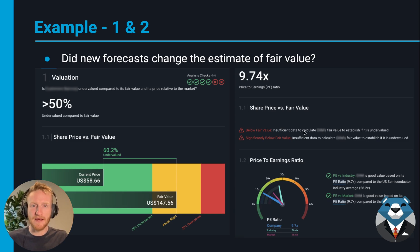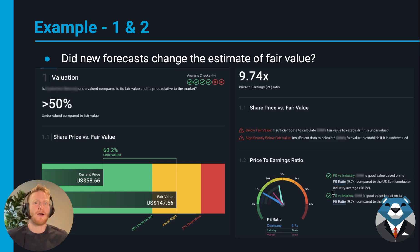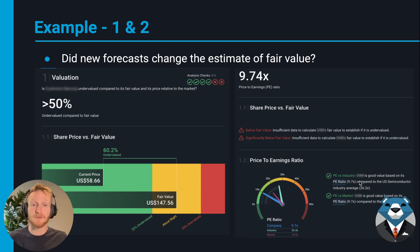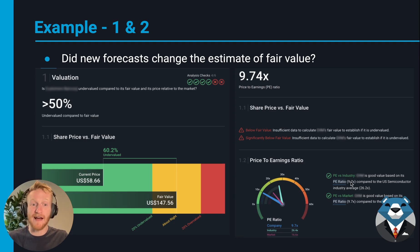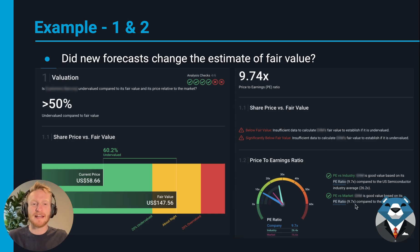If there isn't enough analyst coverage on a stock, there won't be a full valuation section, but there will be price-to-earnings multiple comparisons with the industry. For example, the second company is trading at 9.7 times earnings versus 26 times earnings for the semiconductor industry — which looks cheap. However, its net income is expected to decrease compared to an industry expected to grow earnings significantly, which explains why the market applies a lower multiple. So while the valuation looks cheap, I need that net income growth context to assess whether it's actually a fair price.